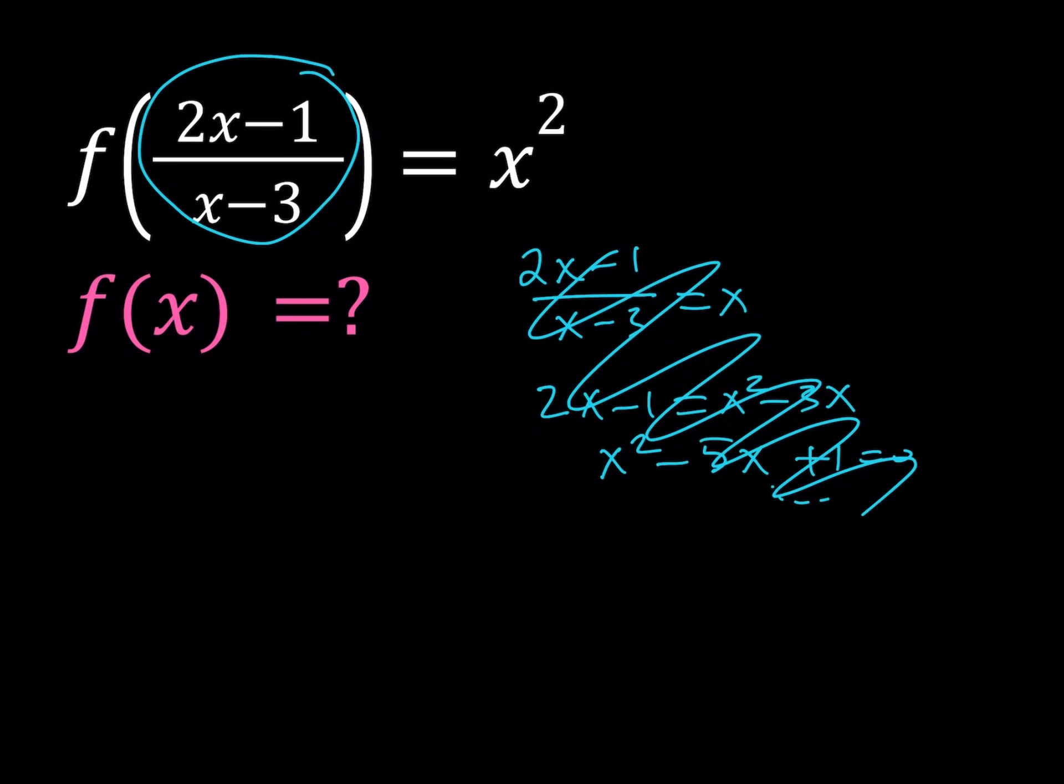We don't want a numerical value, but we want to be able to express this function where the argument is x instead of this rational expression. So this is definitely not the approach to solve these kinds of problems. So here's what we're going to do. We're going to set 2x minus 1 over x minus 3 equal to another variable. Let's call this y.